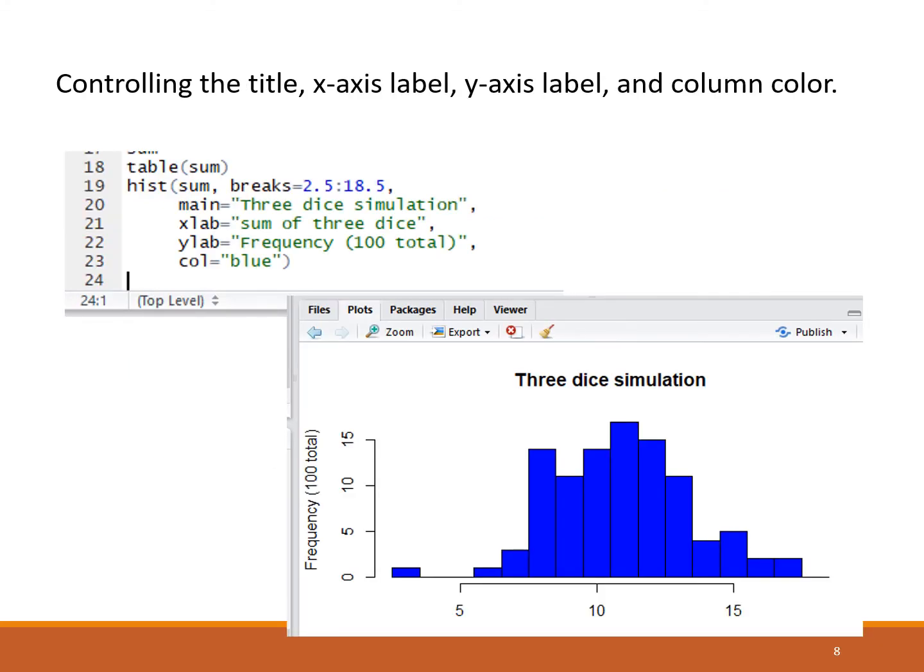Here we are showing the hist function with a few more arguments. We had the usual sum, the thing we're making the histogram of, the breaks, making it divide up into columns nicely the way we want. Then we've added a main, which gave us a title. We gave an x label. I cut the picture off a little too low to see that. We put a y label. You do see that. And then I made the columns blue.